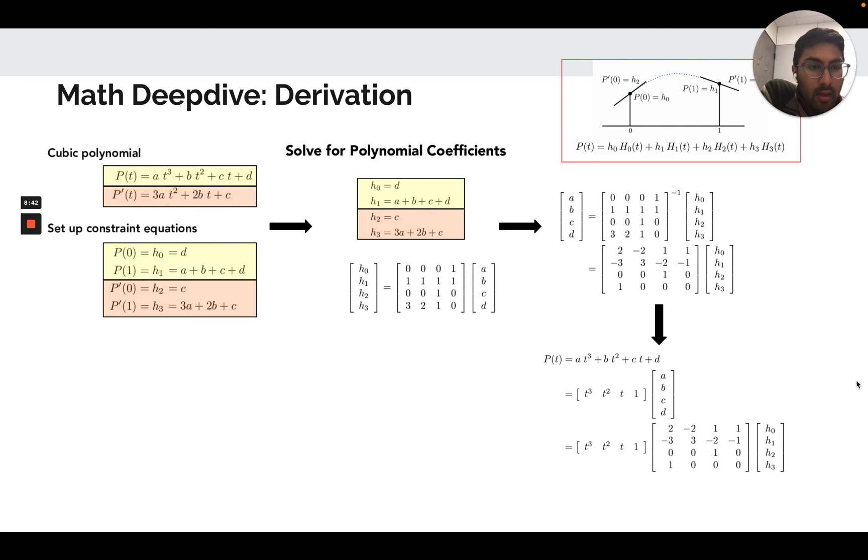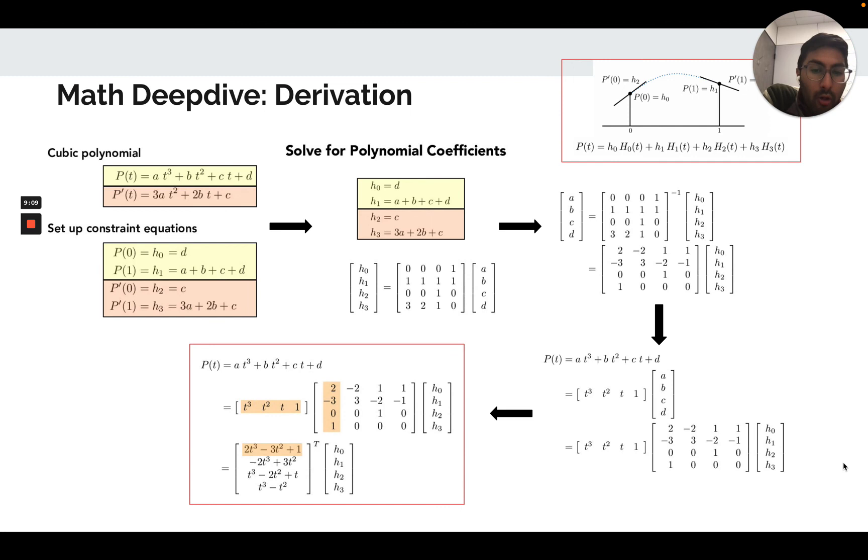Writing that out, we're trying to solve for this polynomial p of t, which is a weighted function of these bases: t cubed, t squared, t, and the constant one. Plugging in the equation we just derived, the matrix equation we just derived for the coefficients, results in this form. So our polynomial is given by a matrix multiply of this fixed matrix against the inputs given by the user and these basis functions. But we can rewrite this into a more convenient form involving a single multiplication here, other than these three terms.